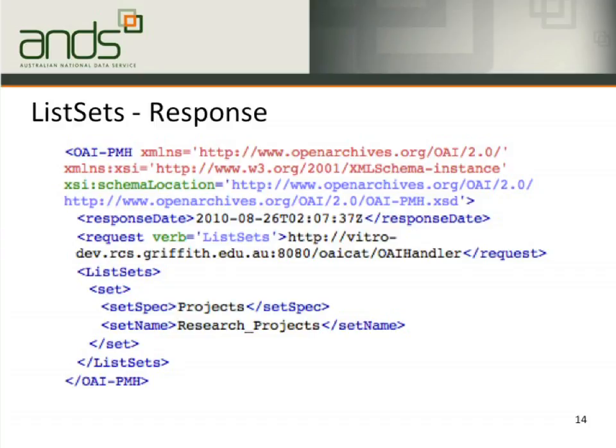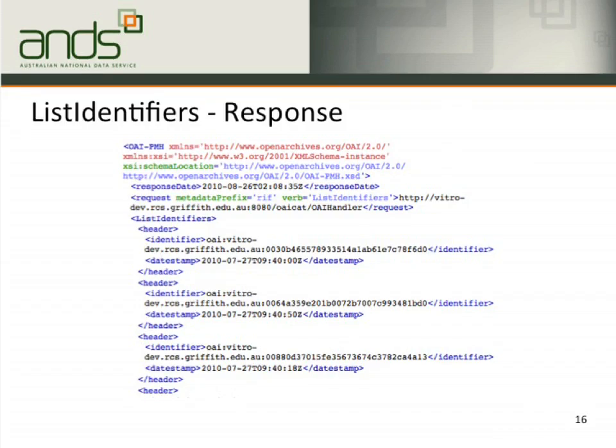Now let's look at ListIdentifiers. This can list all the unique identifiers corresponding to records in your IR. The identifier can be a globally unique persistent identifier or a local identifier. You can also add parameters to show identifiers for a certain period of time, or identifiers minted within a specific set. In this command I ask OAI cat at Griffith's unit to list all identifiers in RIF-CS format, and the response gives me all the identifiers.